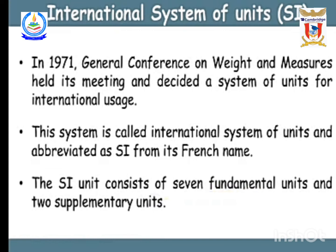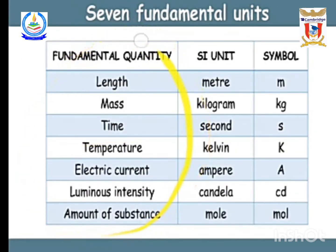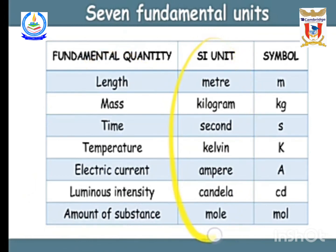The International System of Units, known as SI units, is the main unit system used in physics, chemistry, and mathematics. These units are used all over the world. In 1961, the General Conference on Weights and Measures decided on a system of units for international use, abbreviated as SI from its French name. The SI system consists of seven fundamental units and two supplementary units. The seven fundamental quantities are: length, mass, time, temperature, electric current, luminous intensity, and amount of substance.